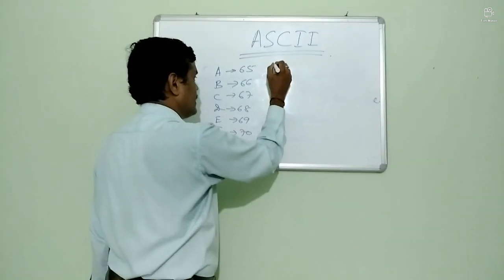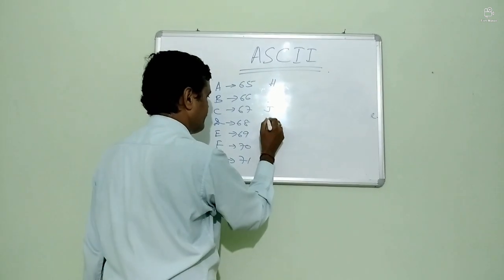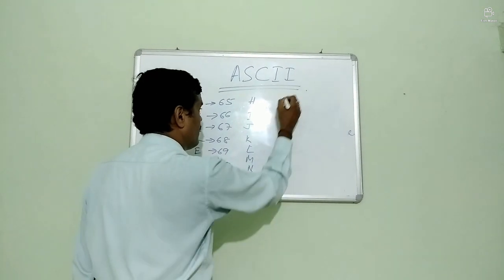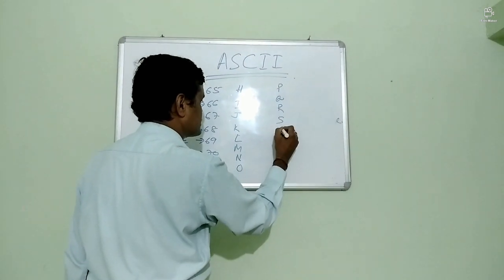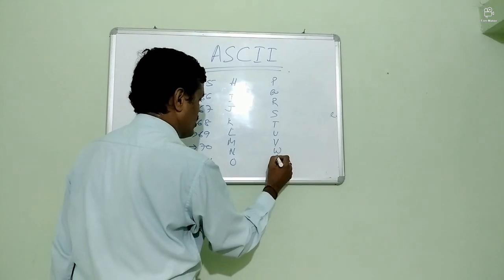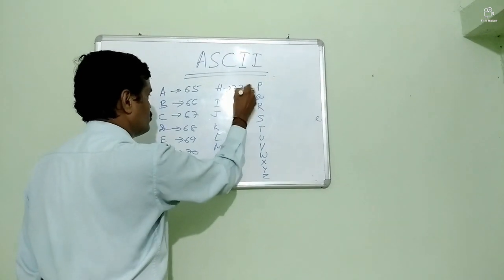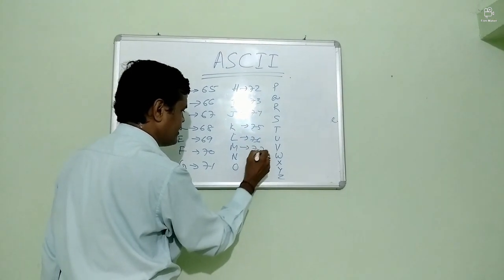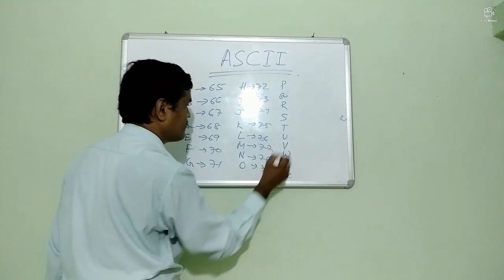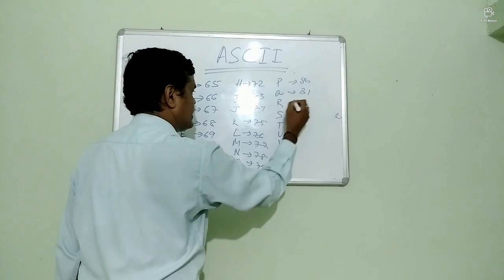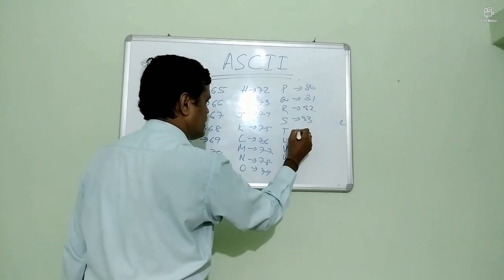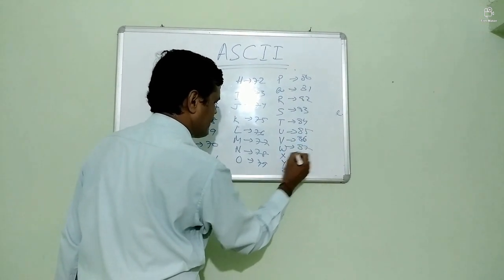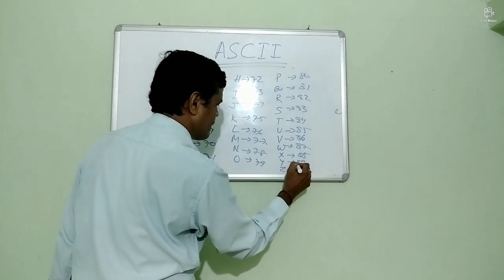In this way, continuing: G is 71, H is 72, I is 73, J is 74, K is 75, L is 76, M is 77, N is 78, O is 79, P is 80, Q is 81, R is 82, S is 83, T is 84, U is 85, V is 86, W is 87, X is 88, Y is 89, Z is 90.